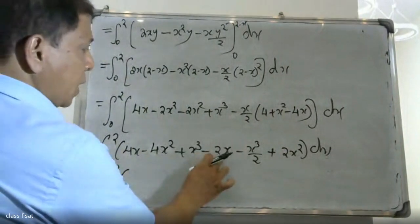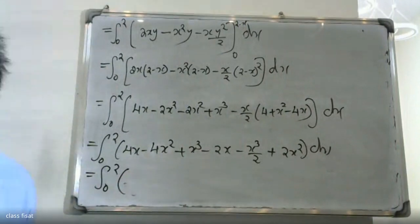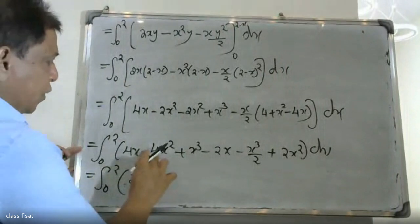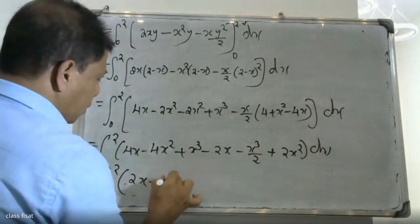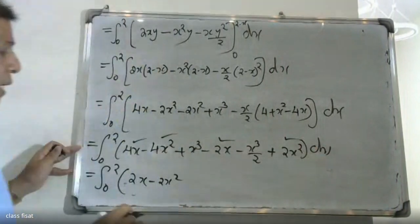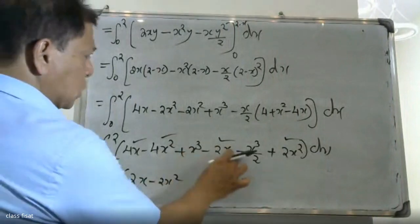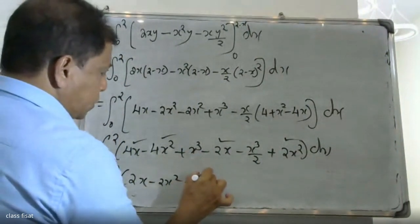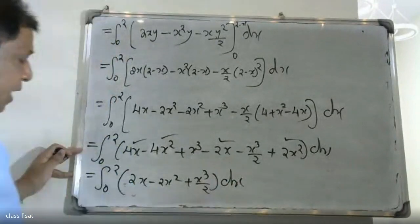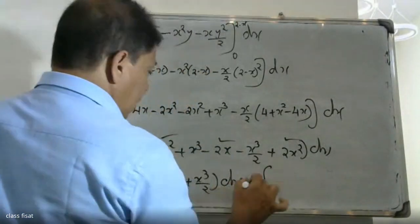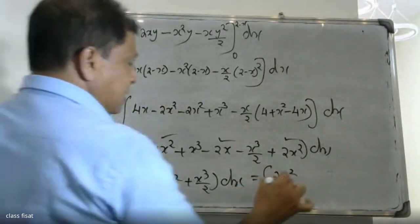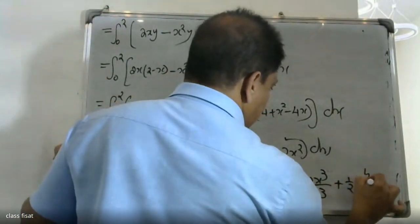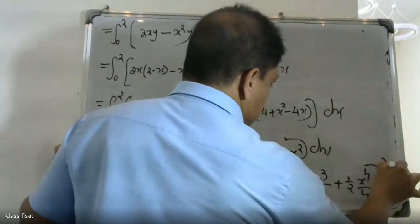Combining terms: 4x and 2x, then -4x² plus 2x², giving -2x². Integrating: 2x²/2 minus 2x²/2, minus 2x³/3 plus 2x³/3, plus (1/2)(x⁴/4). Applying the limit from 0 to 2 gives x⁴/4 evaluated at x equals 2.